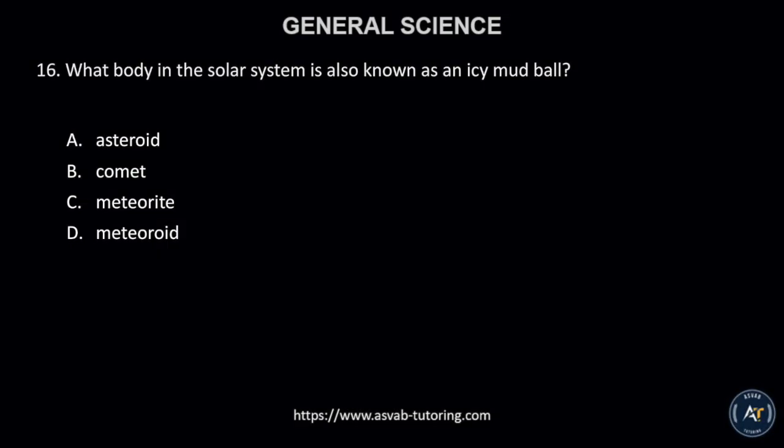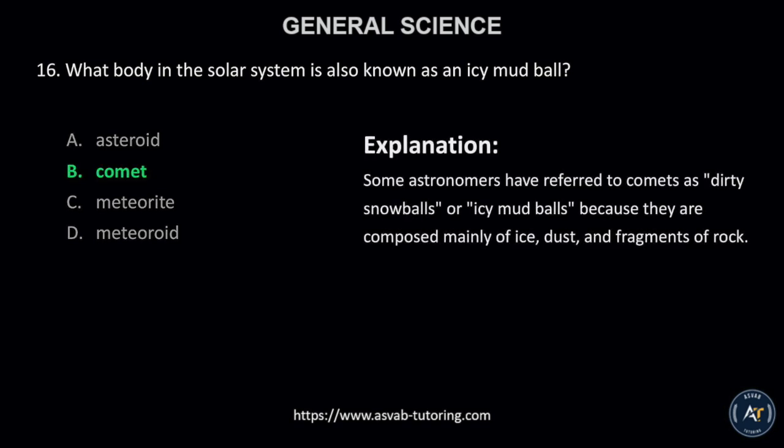Number 16. What body in the solar system is also known as an icy mud ball? A. asteroid, B. comet, C. meteorite, or D. meteoroid? The correct answer is letter B, comet. Some astronomers have referred to comets as dirty snowballs or icy mud balls because they are composed mainly of ice, dust, and fragments of rock.